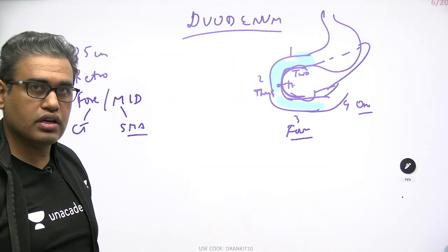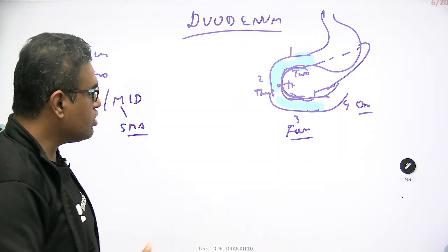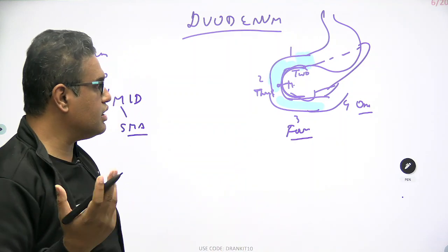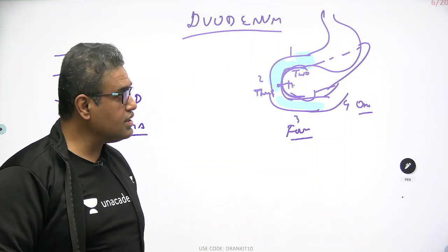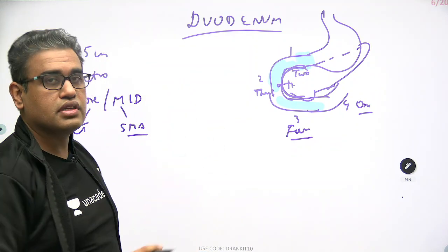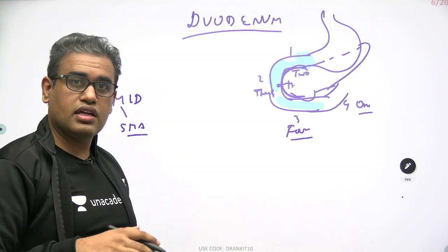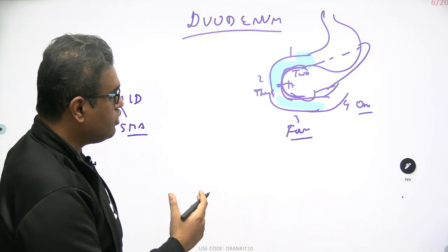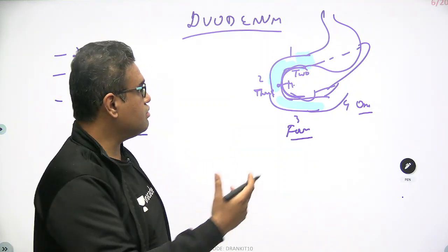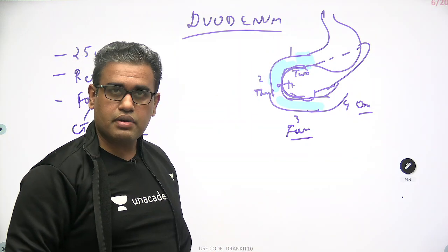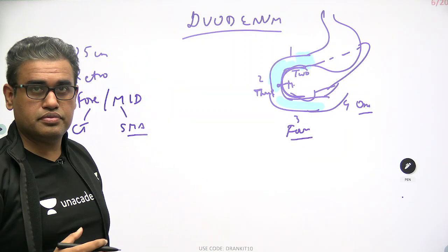Why do we need to know the anatomy of the duodenum? They may ask straightforward questions, but more importantly, they will ask about the important structures around the duodenum. Anatomically, as a surgeon, you need to know what lies around the duodenum before approaching any of its four parts. Let us now look at the relations of the duodenum.